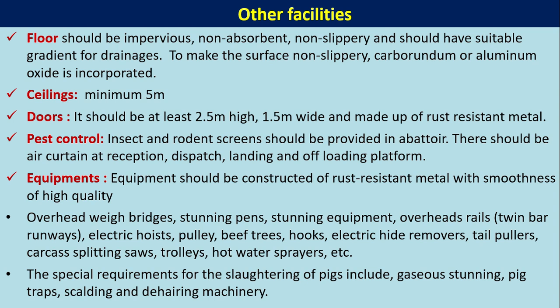Floors should be impervious, non-absorbent, non-slippery, and have a suitable gradient for drainage. To make surfaces non-slippery, carborundum or aluminum oxide is incorporated. Ceilings should have a minimum height of five metres. Doors should be at least 2.5 metres high and 1.5 metres wide, made of rust-resistant metals. Insect and rodent screens should be provided.